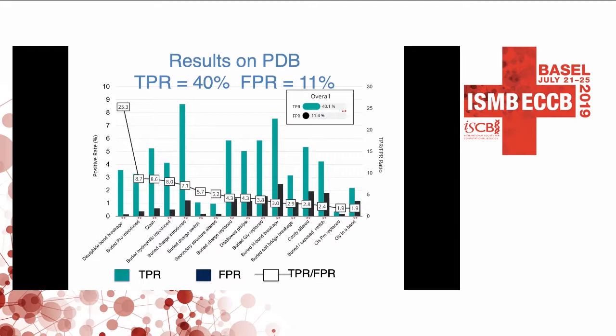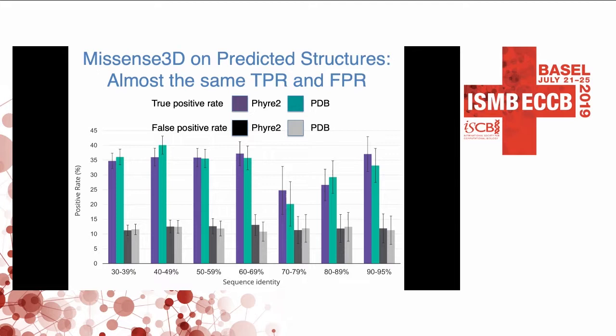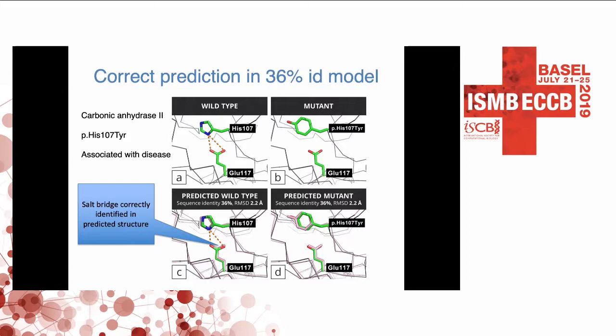We also want to assess how well this works with structural models. Plotting the sequence identity between the query and the template against RMSD, we can see that even at low levels of sequence identity — say 30% — we still have an RMSD of around 2.8 angstroms. We show the true positive and false positive rate with models in purple and PDB in blue, and the results are really very similar across a range of levels of sequence identity.